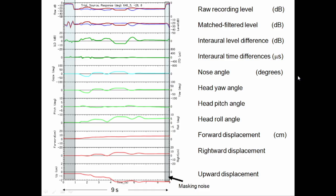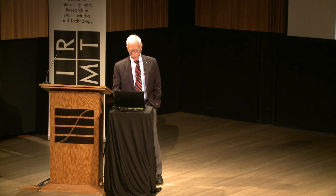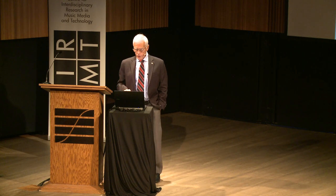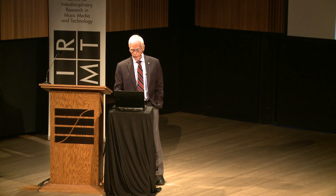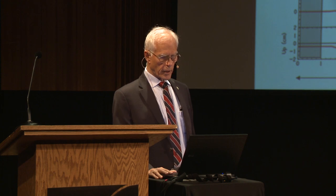We have nine-second trials, but the first second and last fraction are masked, so the listener ends up with about seven and a half seconds. Over this span of time, we measure six degrees of freedom of the listener's head: pitch, yaw, roll, forward and back, left and right, up and down. We reduce these motion data to a nose direction, which I call gaze. In the future we'll reduce all six degrees of freedom to just one nose direction. We also have the interaural level difference and interaural time difference, giving us massive amounts of data, updated every tenth of a second.